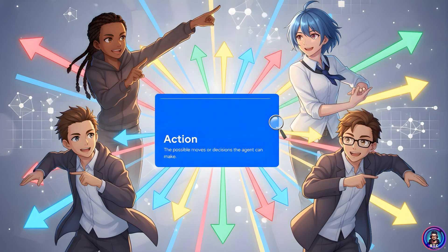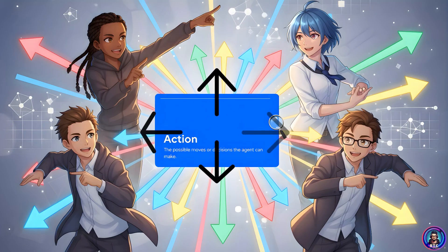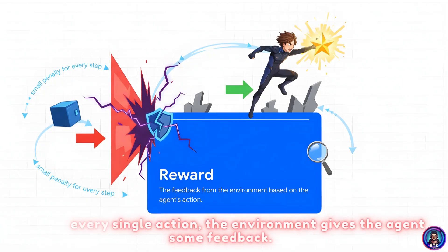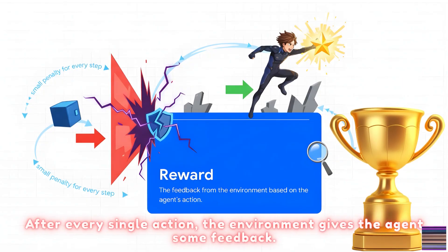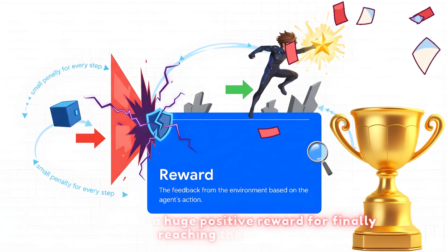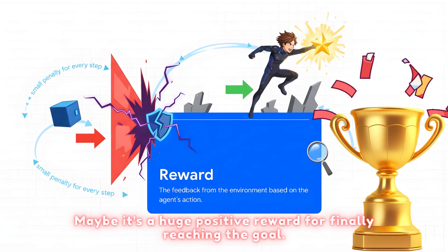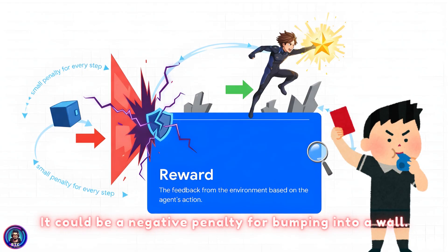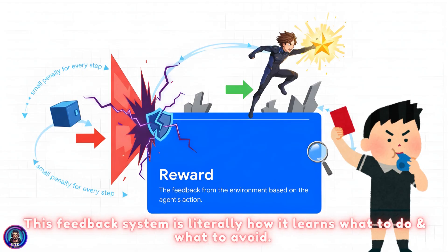Actions are the choices the agent has. For our hero it's straightforward: it can move up, down, left, or right. That's it. And here is the absolute key to everything — the reward. After every single action, the environment gives the agent some feedback. Maybe it's a huge positive reward for finally reaching the goal, or a negative penalty for bumping into a wall. This feedback system is literally how it learns what to do and what to avoid.